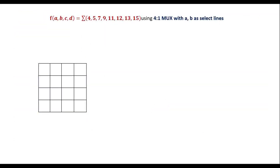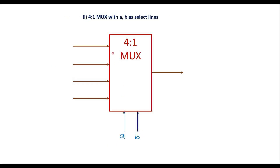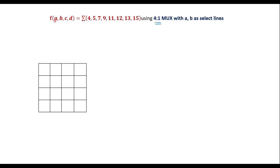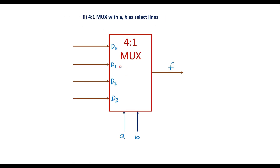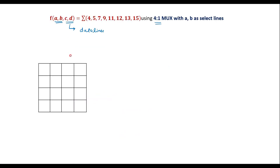Now let me consider the second case: implementing f(a, b, c, d) using a 4-to-1 MUX with a, b as select lines. In the previous case we used a, b, c as select lines, but now we use a, b as select lines with a 4-to-1 MUX. In a 4-to-1 MUX, a and b are the select lines, data inputs are d0 to d3, and the output is f. Therefore c and d should be used as data lines, and we need to express d0 to d3 in terms of c and d.